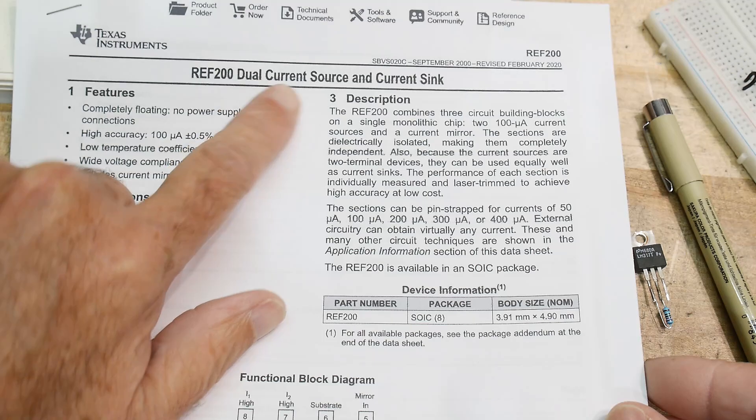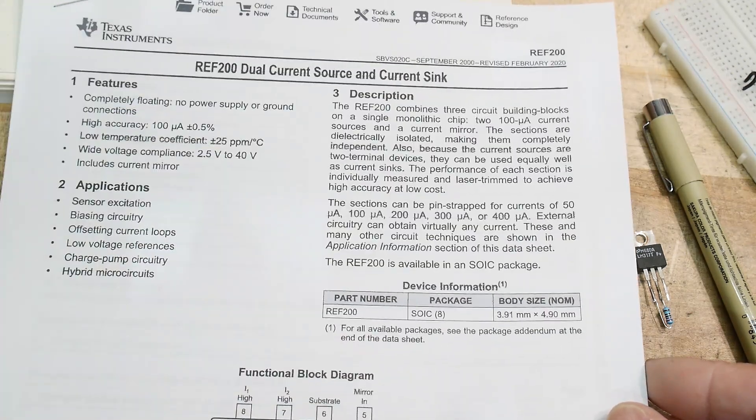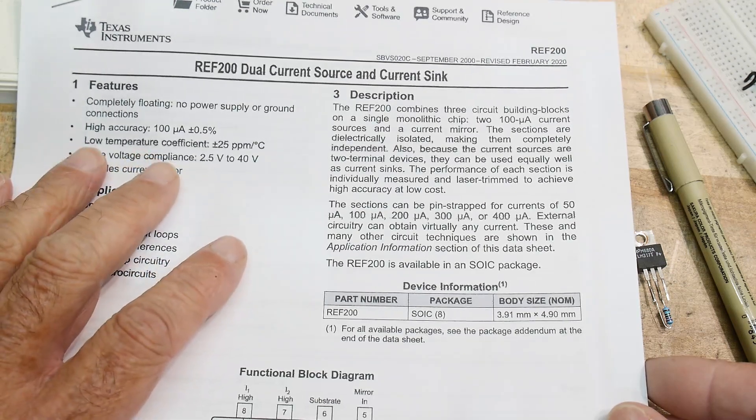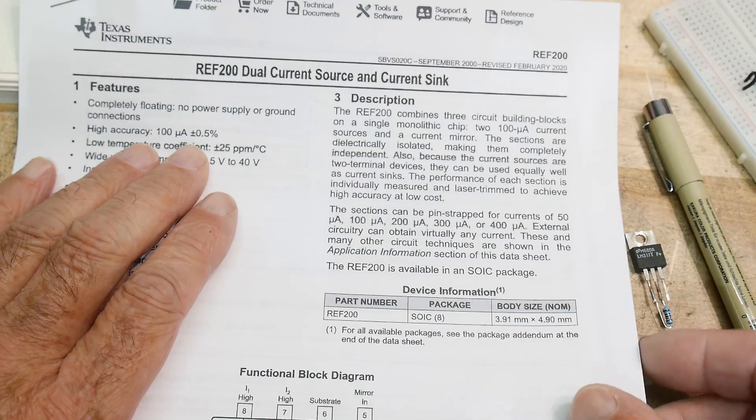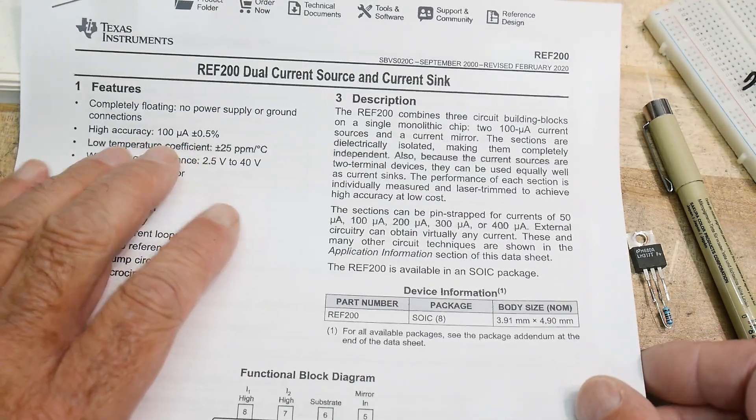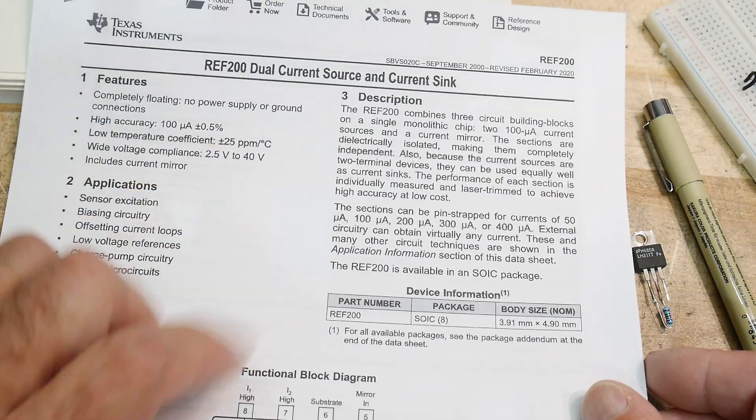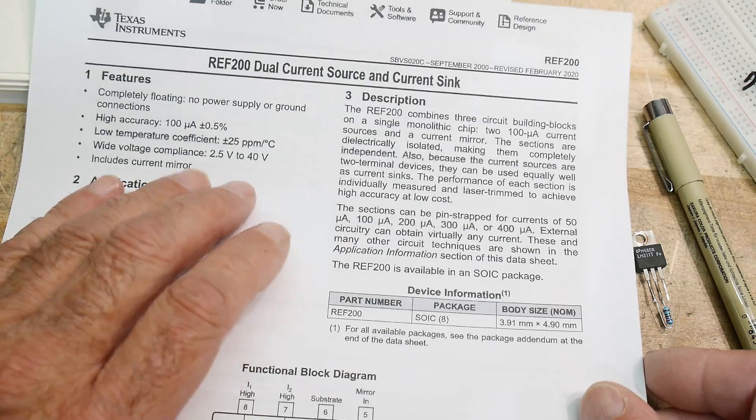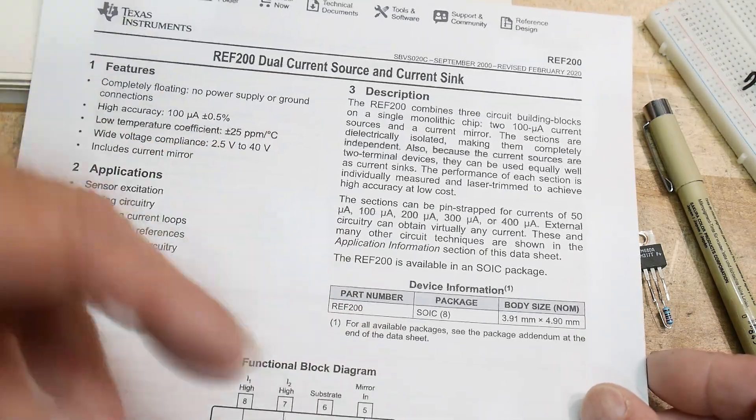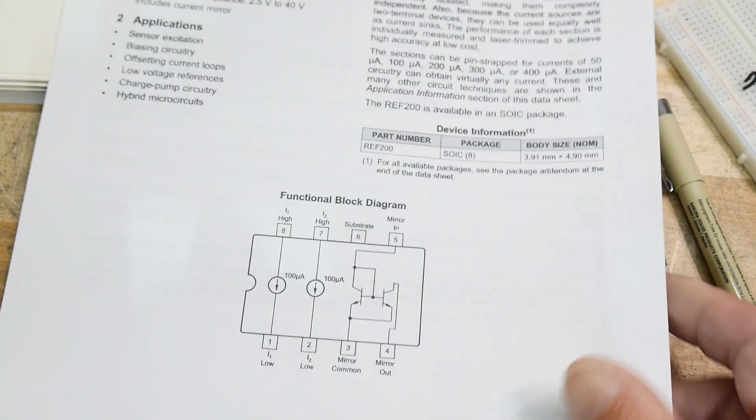All right, a REF 200 dual current source and current sync. Source and sync, that's kind of weird. So it says it's high accuracy. It's plus and minus 0.5%. So I guess that's pretty good. So if you need to have something laying around that's half a percent precision, 100 microamps, this is good. Wide voltage compliant. Yeah, two and a half volts to 40 volts. It doesn't matter what kind of volts you put into it. It'll source the same amount of current.